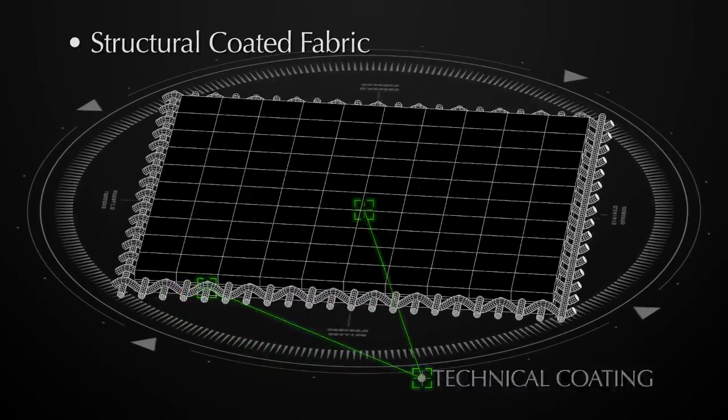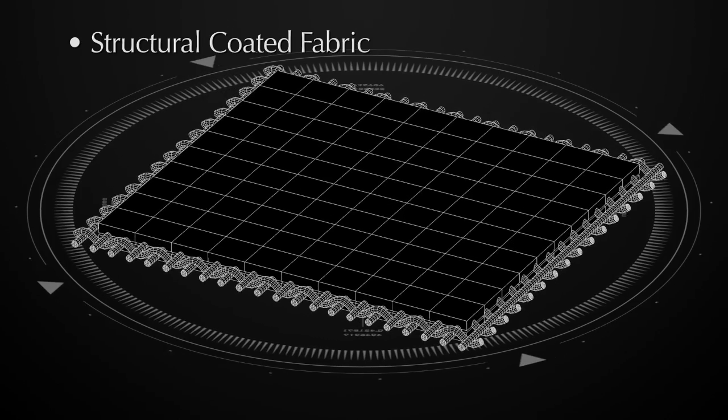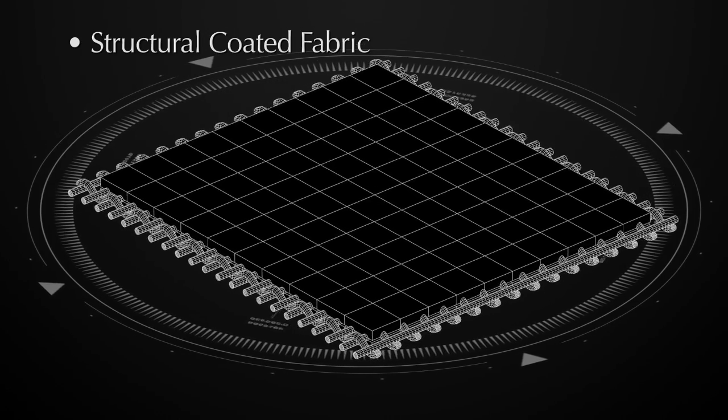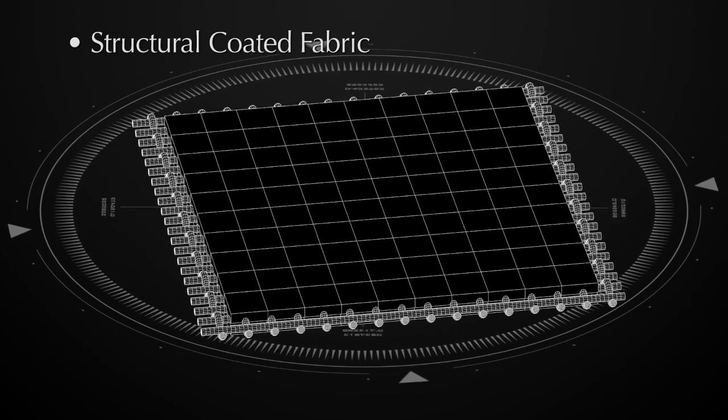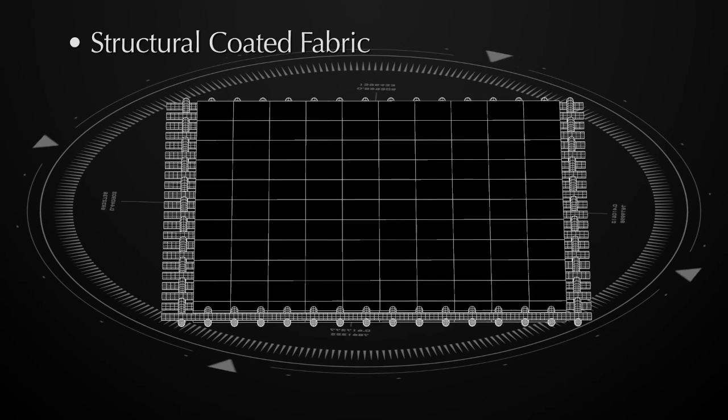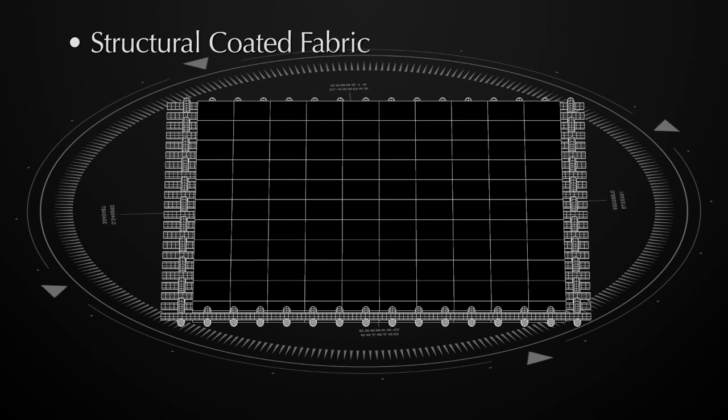Coated fabrics can be characterized by the fact that the woven or knitted base cloth provides the structural strength of the fabric and the coating provides weatherproofing, color and the required technical characteristics such as UV resistance, flame retardancy and the welding ability.